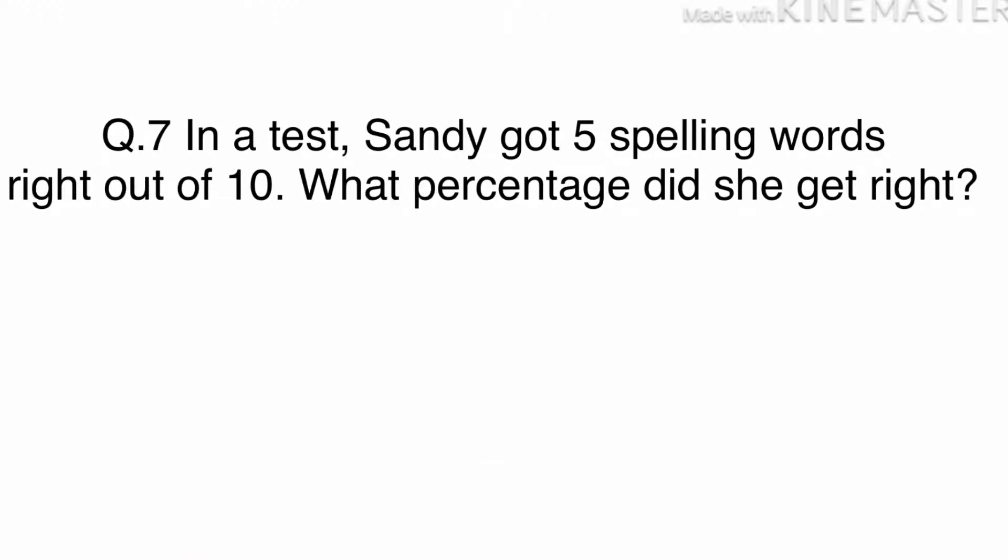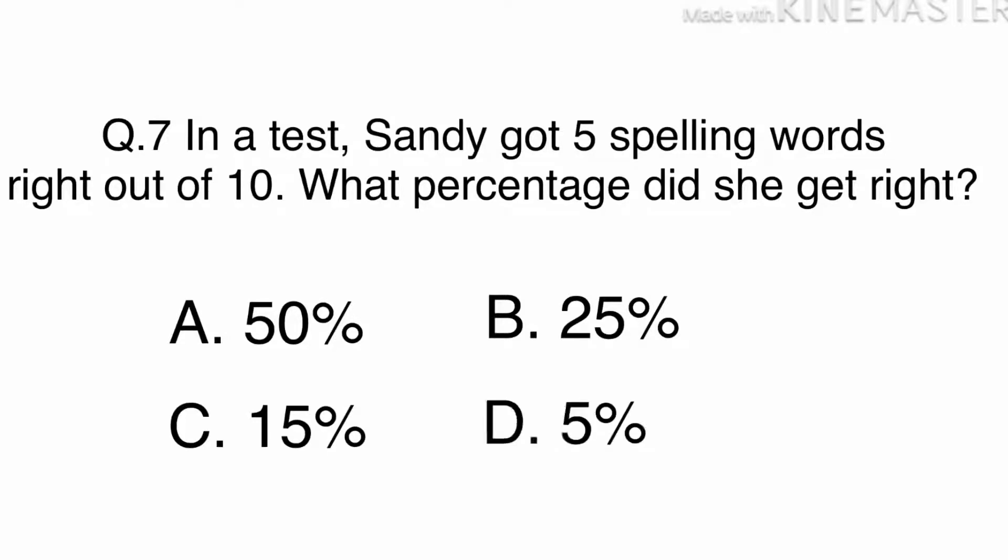Question 7. In a test, Sandy got 5 spelling words right out of 10. What percentage did she get right? A. 50%, B. 25%, C. 15%, Or D. 5%.